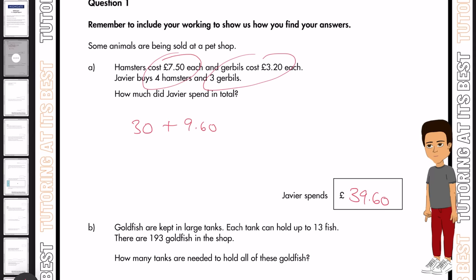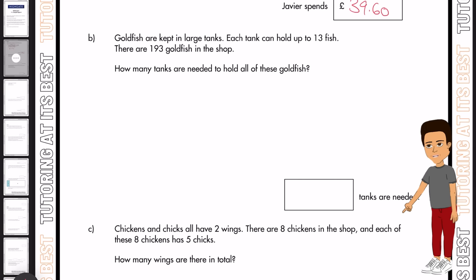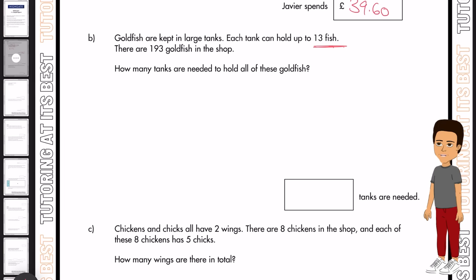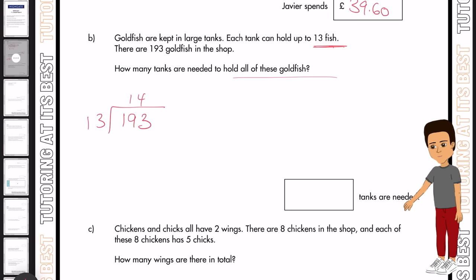Part B. Goldfish are kept in large tanks and each tank can hold up to 13 fish. There are 193 goldfish in total. So how many tanks are needed to hold all of these goldfish? So all we need to do is 193 divide that by 13. We know that 14 times 13 is 182.